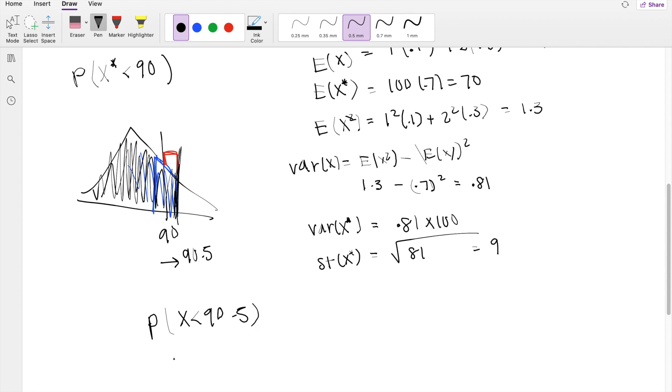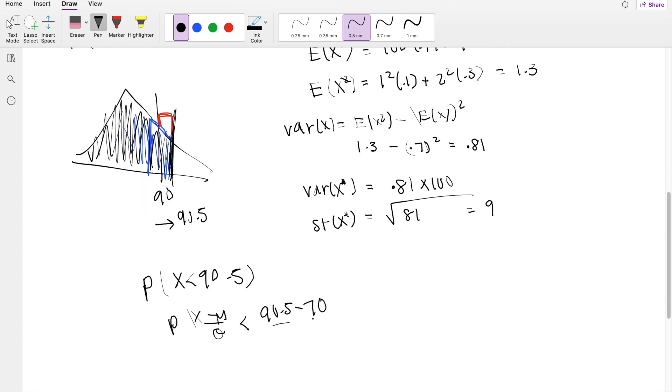Normalizing this, you get X minus mean over standard deviation is less than 90.5 minus mean, where mean equals 70, divided by standard deviation 9. This is the definition of z. So this equals z is less than 90.5 minus 70, divided by 9, which equals z is less than 2.2778.